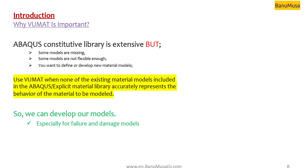However, some models are missing in Abaqus, meaning the specific material model you need may not exist. Some models are not flexible enough — for example, you may want to use a newer version of a damage model. Sometimes you want to test an idea, validate results with a paper, or develop entirely new material models. These are the main reasons we write subroutines. You should use VUMAT when none of the existing material models in the Abaqus explicit material library accurately represent the behavior of the material you are modeling.